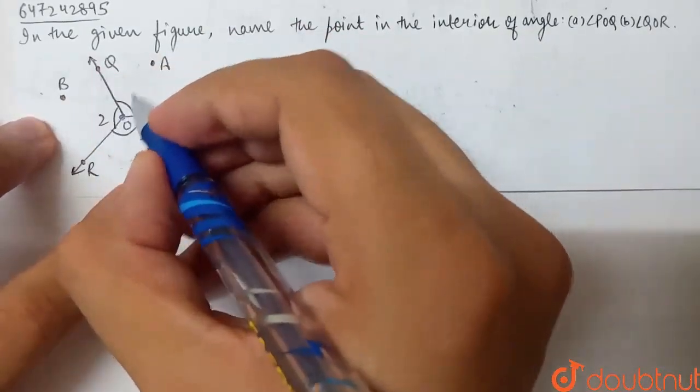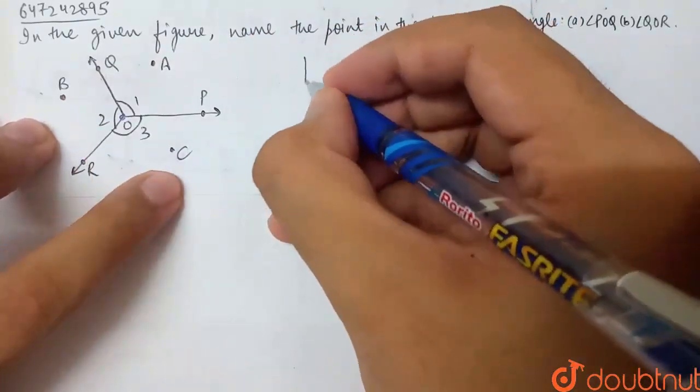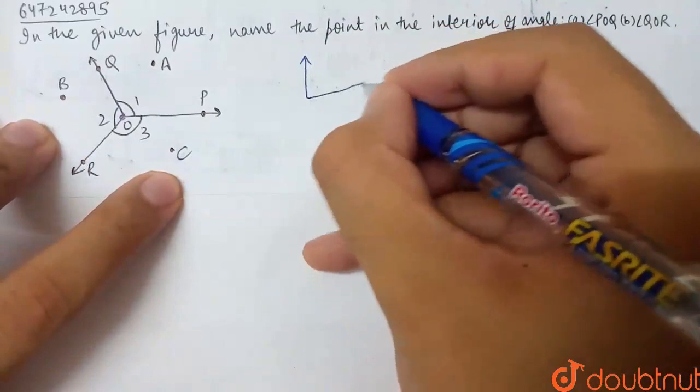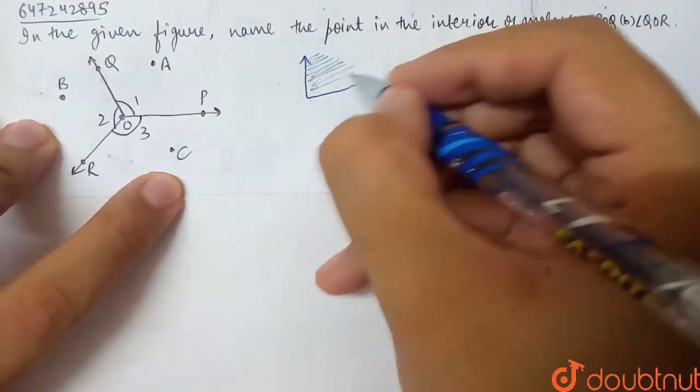So what's happening? Basically, this plane is divided into three angles. Now, if I have one angle like this, this is my angle. So, what is the interior portion? Basically, the interior portion is this.